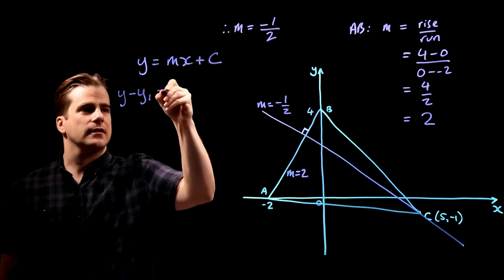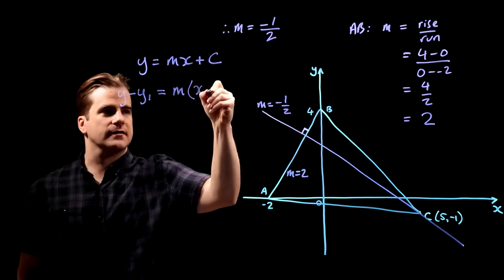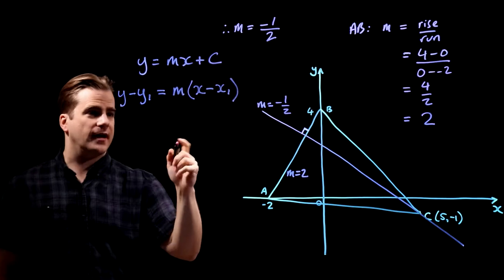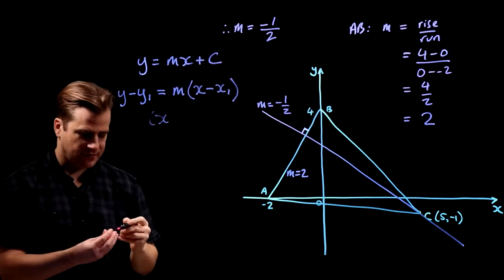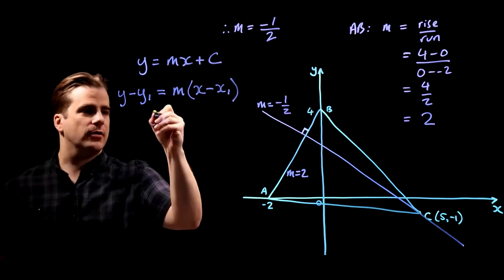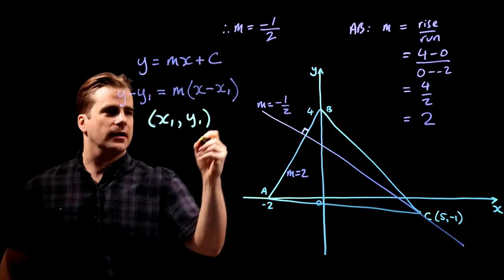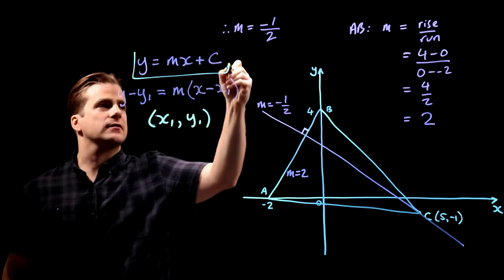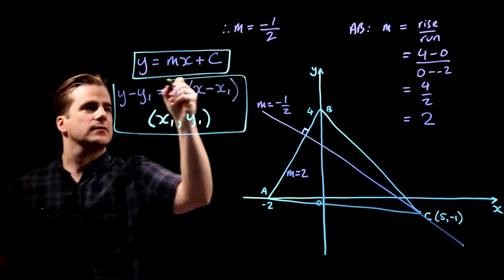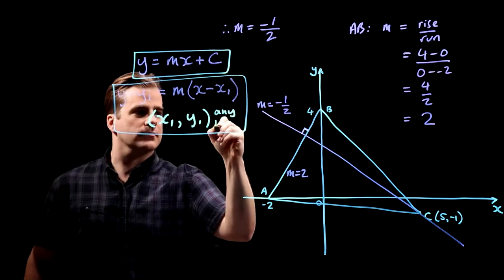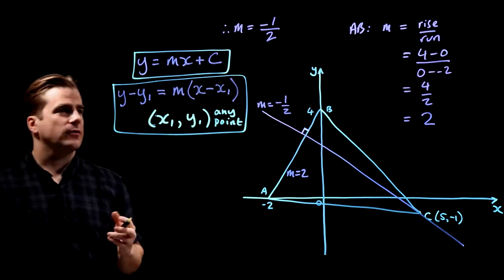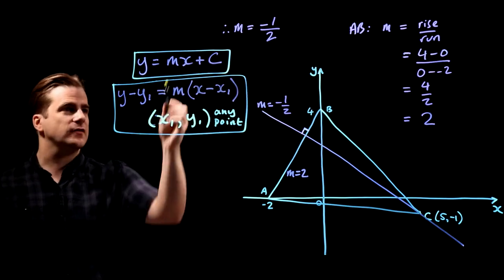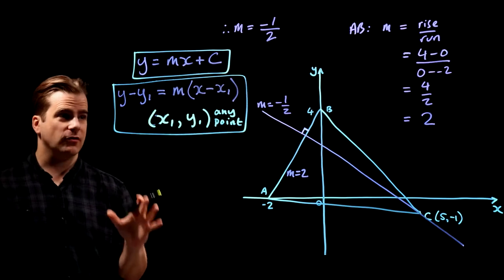y minus y1 is m x minus x1, where x1 and y1, the point x1, y1 is any point on the line. So these are two equations. x1, y1 is any point. So you can express the equation of a straight line like this or like this. They're actually the same equation, two different forms of the same equation. And I strongly recommend you learn both.